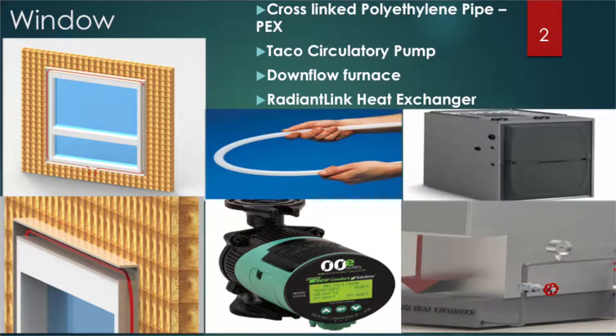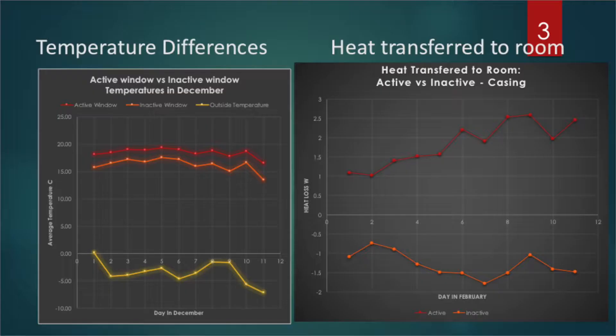Below is the high efficiency circulatory pump designed to circulate a water-glycol solution through the pipes. The source of energy in the system comes from the heated air from the furnace, which is located directly above the radiant link heat exchanger.